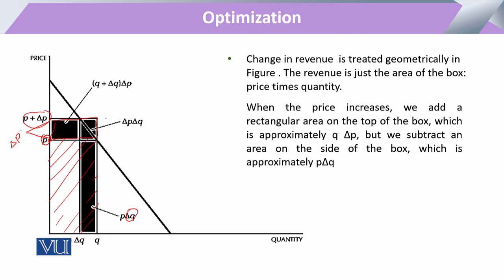So this total box shows that with the change in price there are three aspects: first, the area of (Q + ΔQ) times ΔP; second, the area of original price P times ΔQ; and third, a small area representing the product of both changes — ΔP times ΔQ.